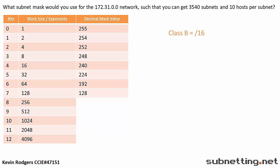Next we'll find the required mask. We have to find the first number in our cheat sheet that has a value above 3540 in the block size exponent column. In this case that is 4096. So we have to add 12 subnet bits to allow more than 3540 subnets. Slash 16 plus 12 equals slash 28.